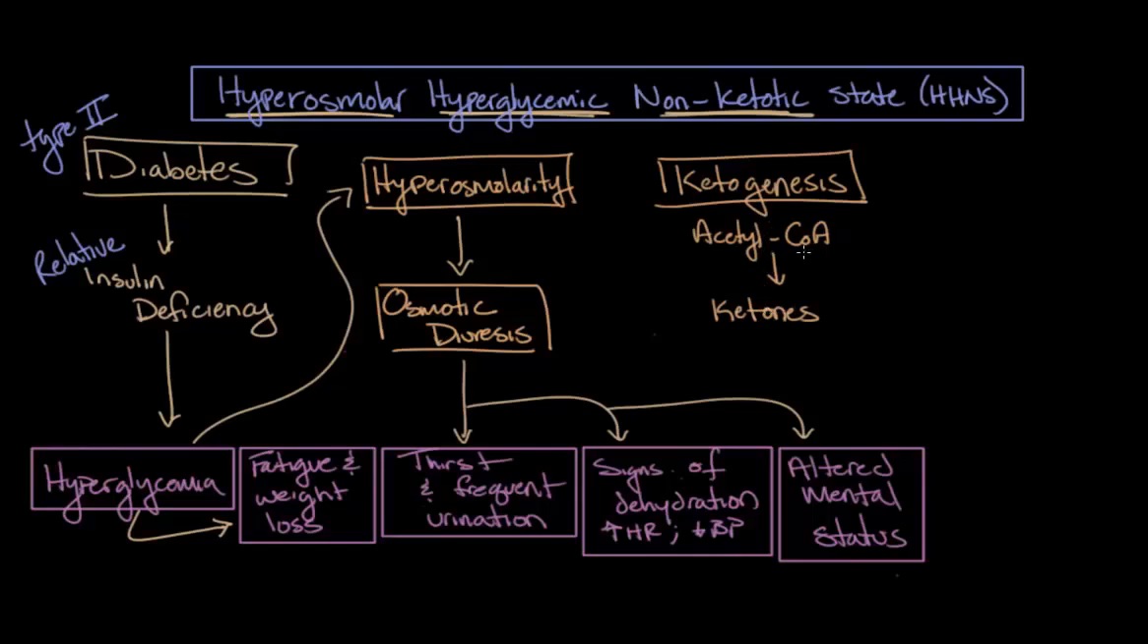However, these ketones, or ketone bodies, they also have a third name, and that is ketoacids. And that's because they're acidic. And so, the production of all of these ketones, or the ketogenesis, results in a metabolic acidosis. Hence, the name diabetic ketoacidosis.